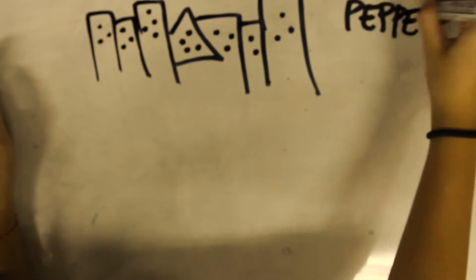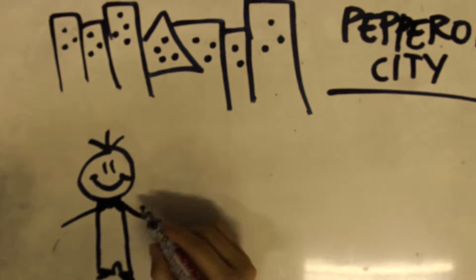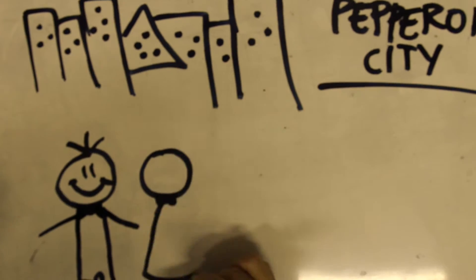Far, far away, in a land called Pepperoni City, lived a happily married couple, Eureka and Lady Boyance.